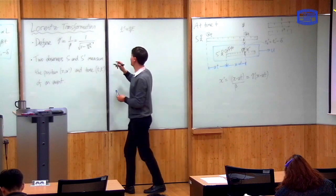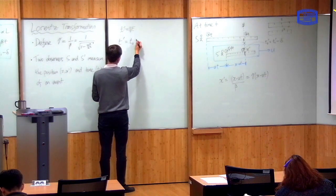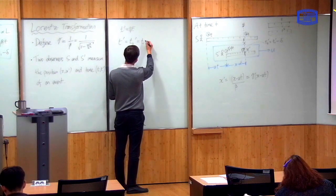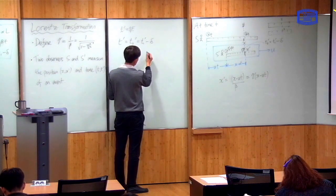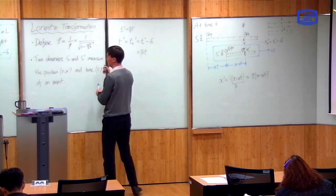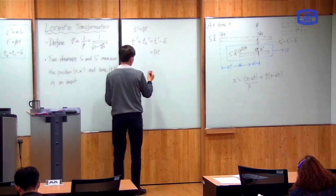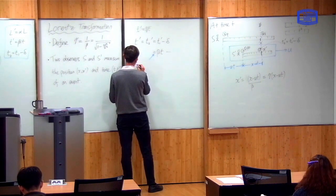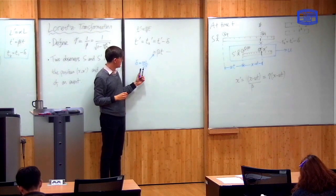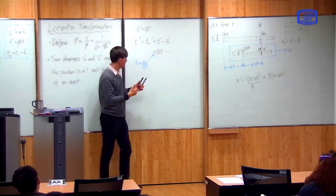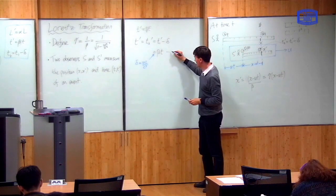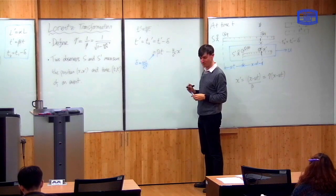So therefore the time that S prime measures for the event, which is t prime, which is t2 prime as I called it there, is equal to, going on the diagram, t1 prime minus delta. t1 prime is just beta times t, we've said. And what's delta? The formula for delta was it was equal to u times l divided by c squared, where l is the distance between the clocks in the rest frame. So in this case, l here is x prime, the distance between the clocks. So this is beta t minus u over c squared times x prime.